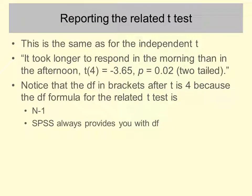Reporting the related samples t-test is the same as for the independent samples t-test. In the example we would write: it took longer to respond in the morning than the afternoon, t(4) = −3.65, p = 0.02, two-tailed. The formula for degrees of freedom in a related samples t-test is simply n − 1, though SPSS will give you this number in the output.